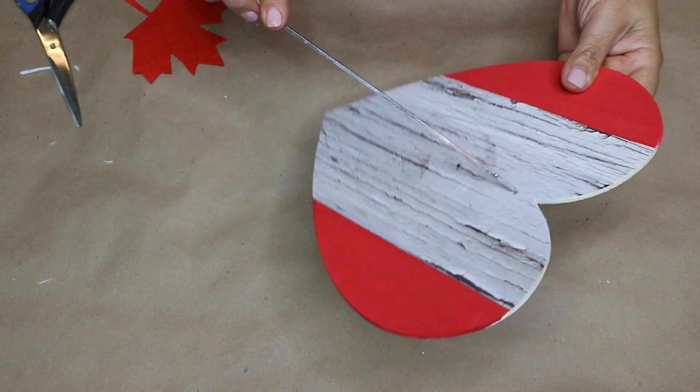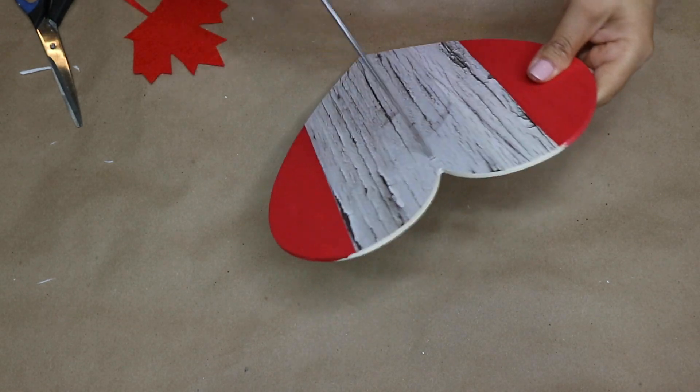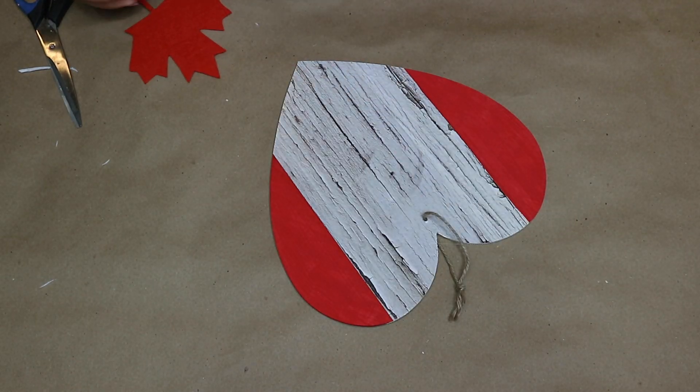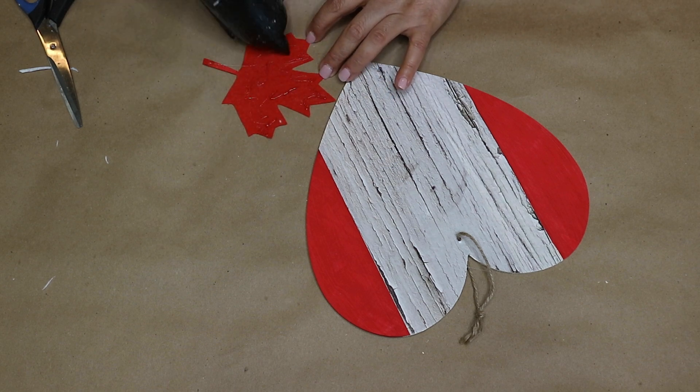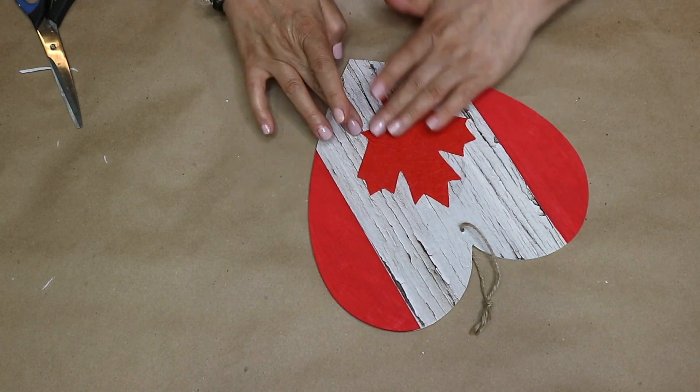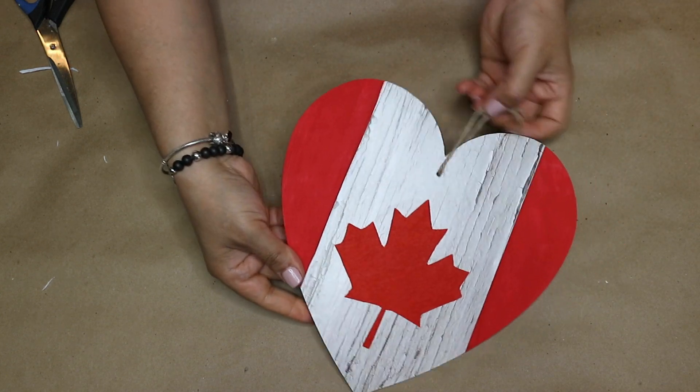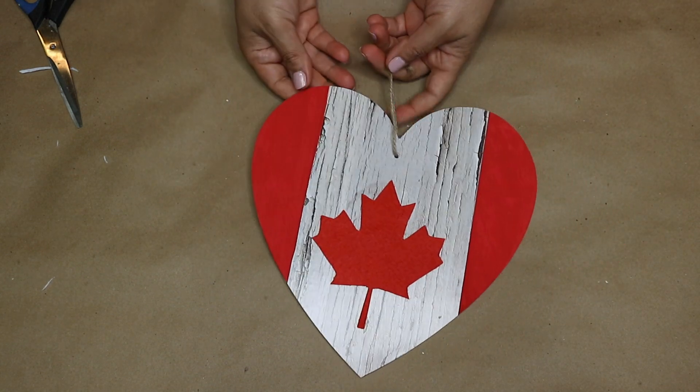Next I poke where the hole is on the side, and then I put the jute hanger back in. Lastly I take one of the red maples and I hot glue it down right here in the middle, and I really love how cute and festive this Canada flag came out.